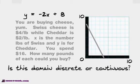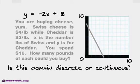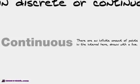Is our domain here discrete or continuous? It is continuous because we have a straight line. We can buy 1.2 pounds of cheese or 0.5 pounds of cheese. We can buy each of those different points that is represented by this line. This is continuous because there's an infinite amount of points in the interval here drawn with a line.